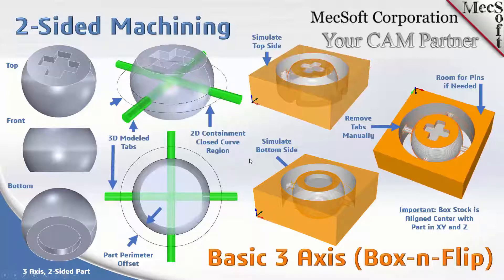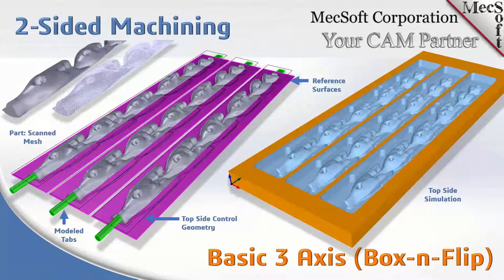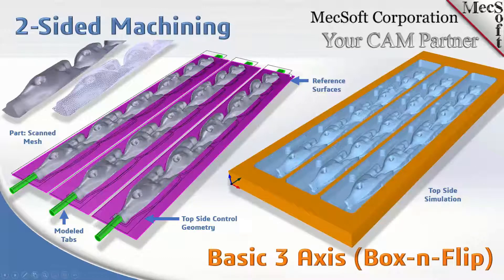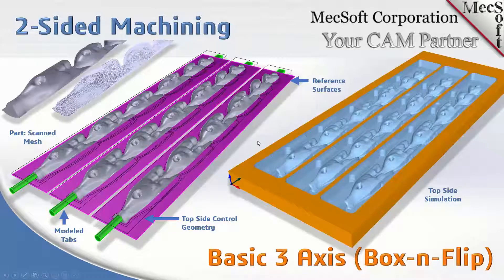I'm going to show you a production application for that. You can see the tabs modeled in green — we have three cylinder rods on one end. On the other end there isn't much room for a cylinder rod, so we modeled a square block that comes in underneath the part. It doesn't have to be a cylinder; it can be any type of surface that will break up the toolpath on each end so the part remains connected to the stock material.